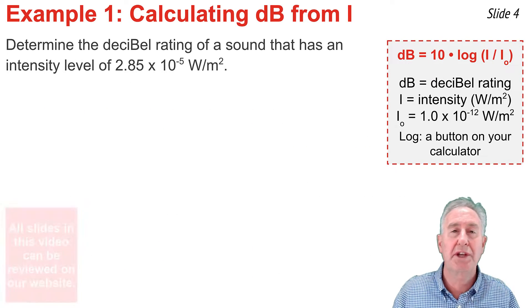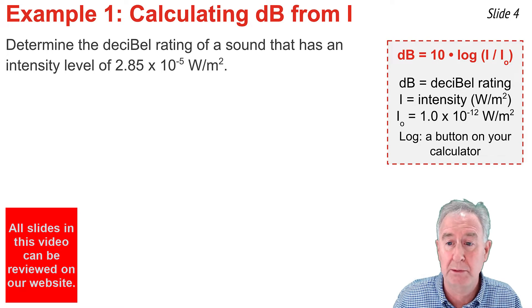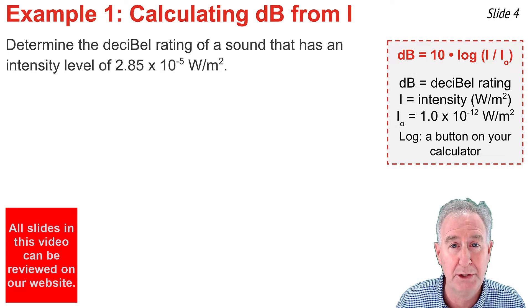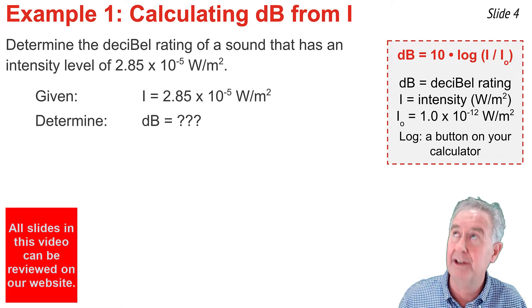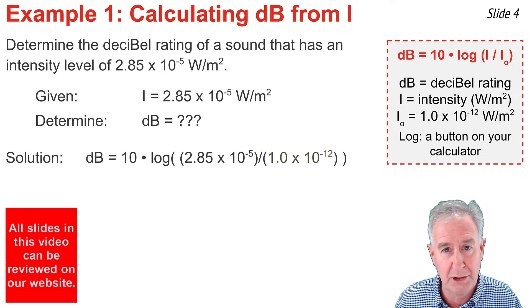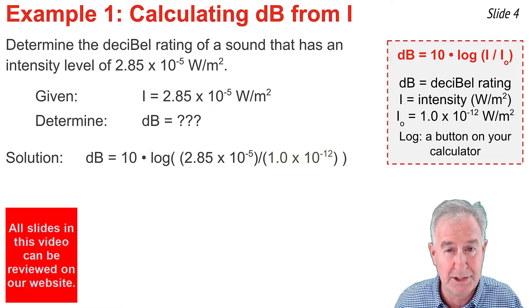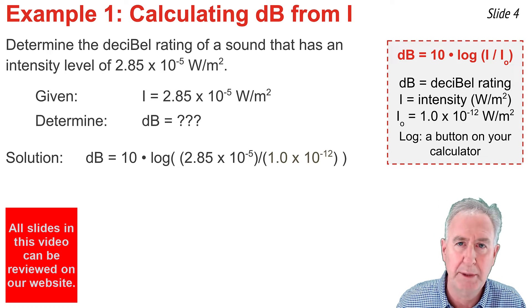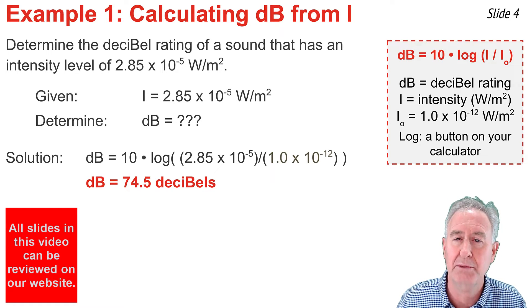In Example 1, we'll use this equation to calculate the decibels from a given intensity value. Determine the decibel rating of a sound that has an intensity value of 2.85×10⁻⁵ watts per meter squared. I know the value of I and I'm looking to calculate the decibel rating. I take that value of I and substitute it into the numerator inside the log parentheses, with 1×10⁻¹² in the denominator. Pulling out a calculator gives 74.5 decibels, rounded to the first decimal place.